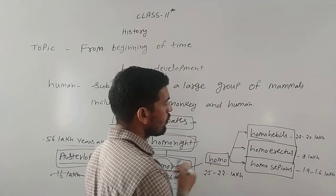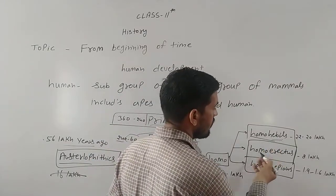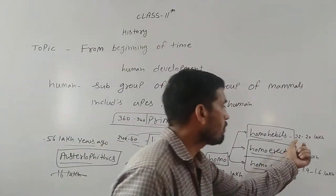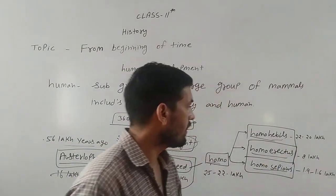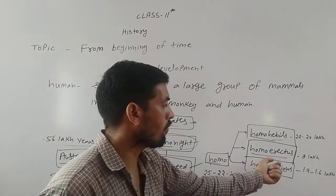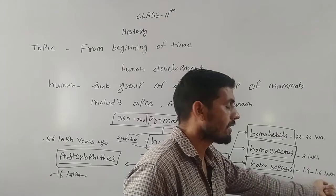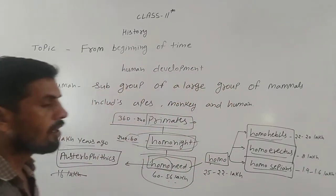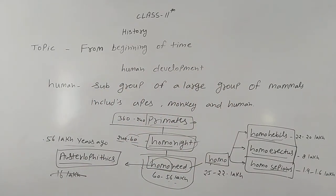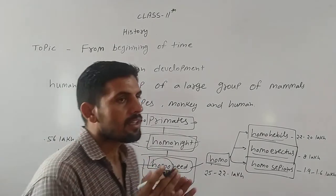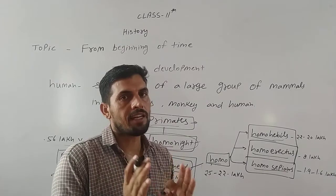The sub-categories under Homo were Homo Habilis, Homo Erectus, and Homo Sapiens. Homo Habilis was about 32,000,000 years ago, Homo Erectus was about 8,000,000 years ago, and Homo Sapiens was about 1,90,000 to 1,60,000 years ago. The sub-category was classified according to its time period.